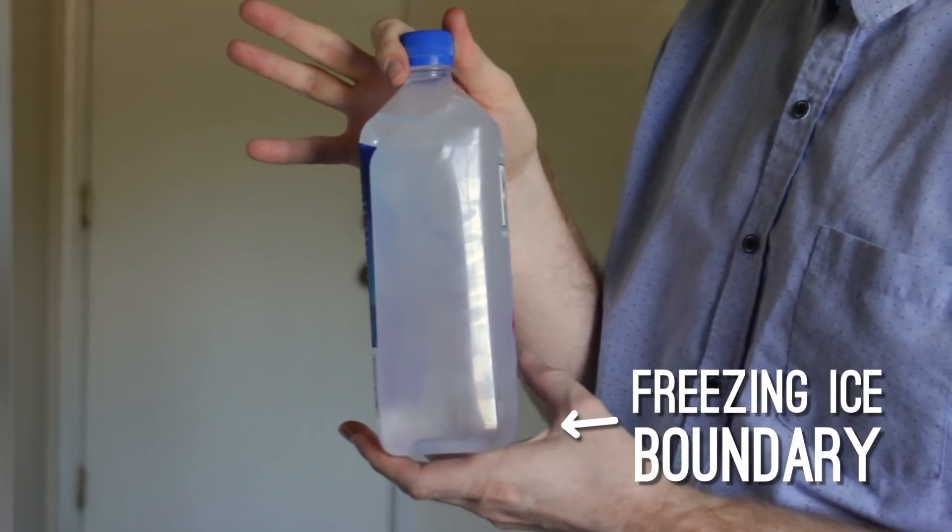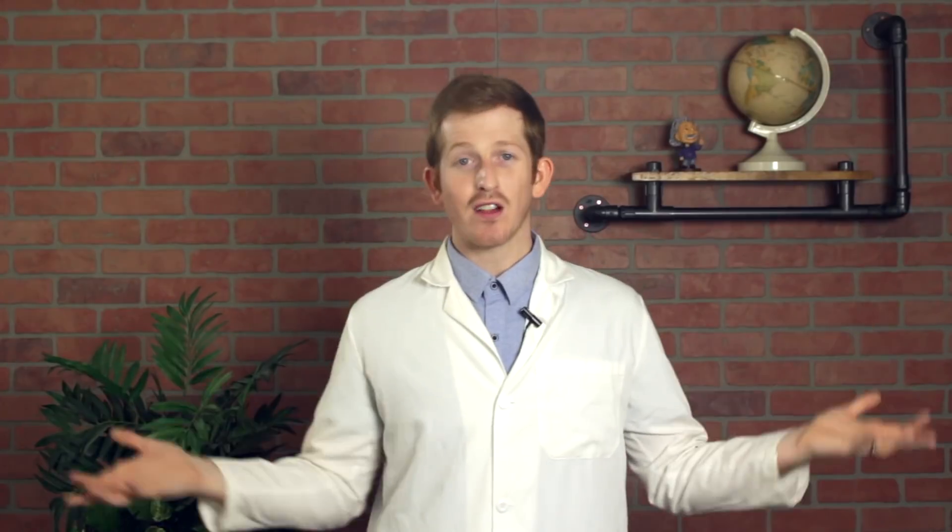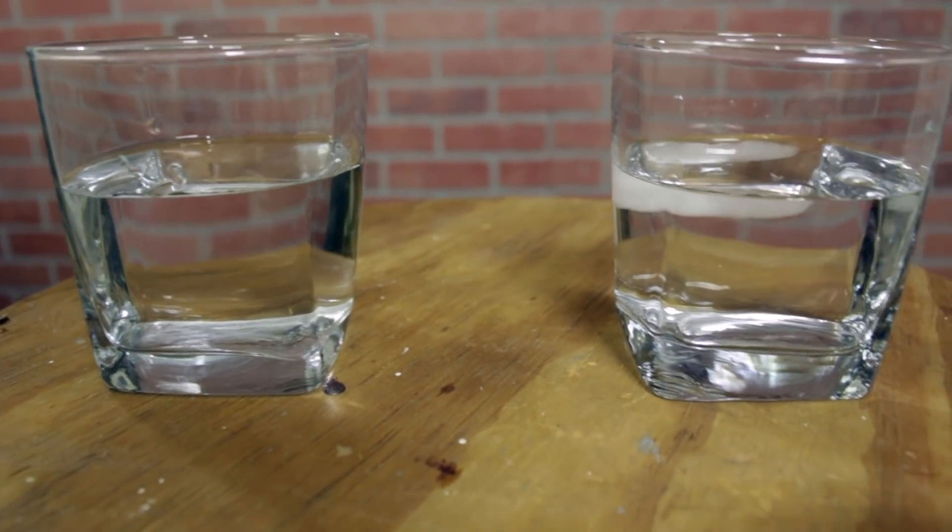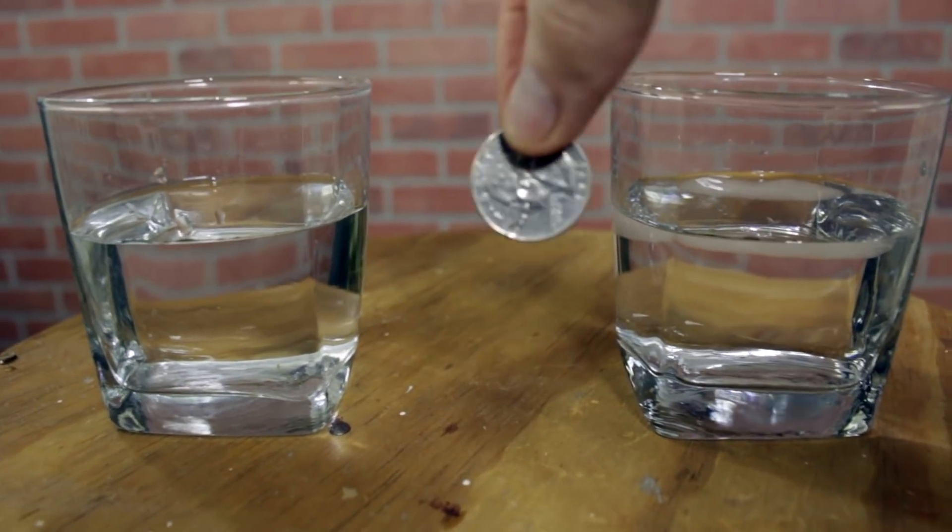Another weird thing ice does is that it floats. Most solids will sink in a liquid because a solid has its molecules packed close together, but ice floats.